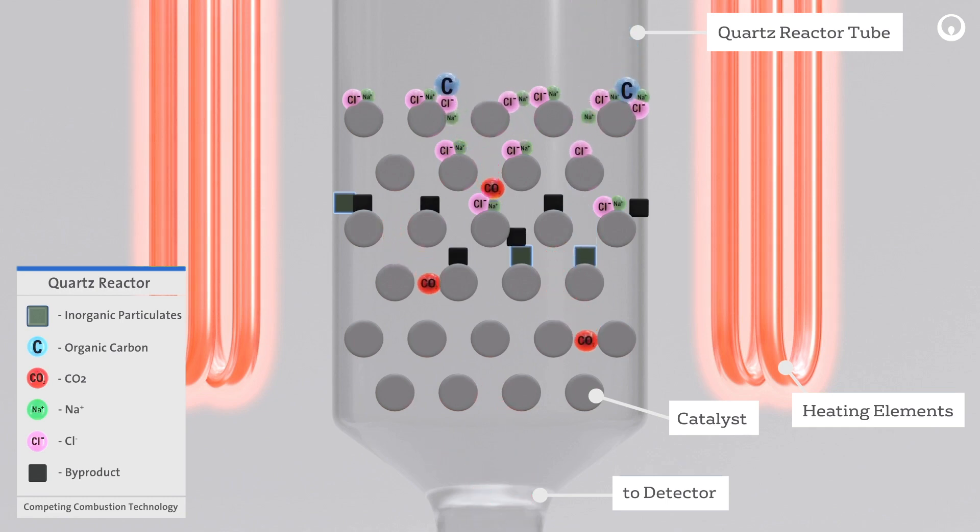The resulting carbon dioxide is carried out to the detector. All salts, particulates and resulting combustion byproducts remain inside the reactor tube and contaminate the platinum catalyst.